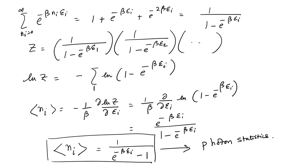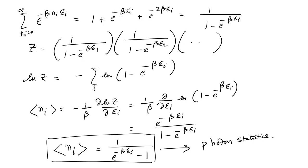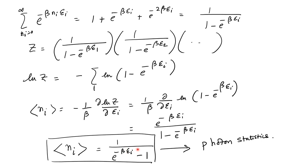For general bosons such as superfluid helium-4, the particle number is conserved, so a chemical potential μ is required. We incorporate μ by replacing εᵢ with (εᵢ - μ) in the grand canonical distribution, where the fugacity is z_f = e^(βμ).